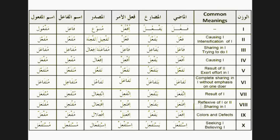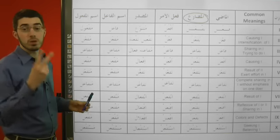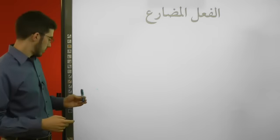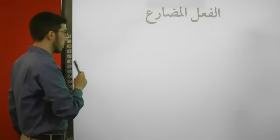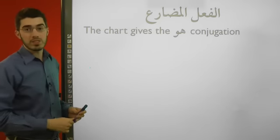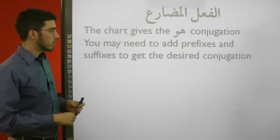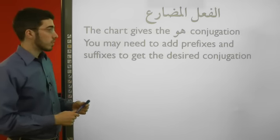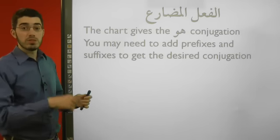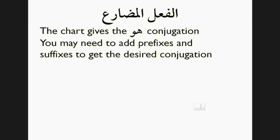Let's move on now to the fourth column from the right — it's the column for the fi'l mudari'. We can make a few comments about it. It's quite similar to the fi'l madi in two important regards. First, this table, as for the fi'l madi, is still conjugated for the huwa conjugation, so watch out for that. And number two, you're going to need to add prefixes and suffixes in order to get the desired conjugation. Notice in the fi'l madi we just change the ending, but in the fi'l mudari' we change what's in front and what's at the end.